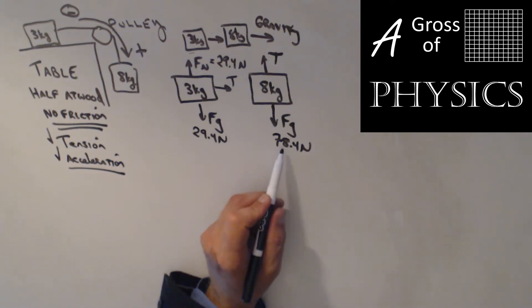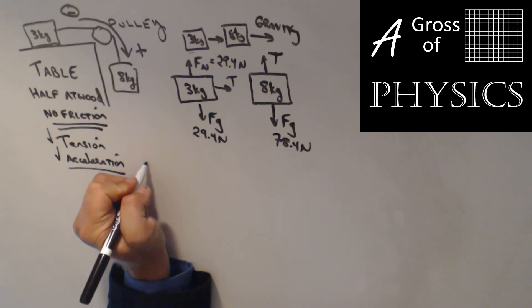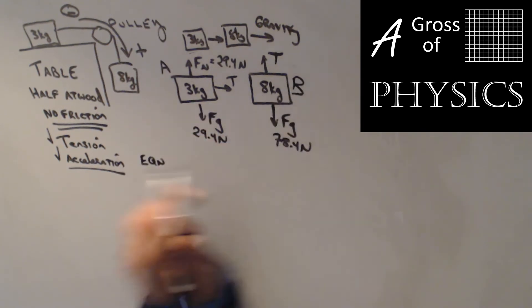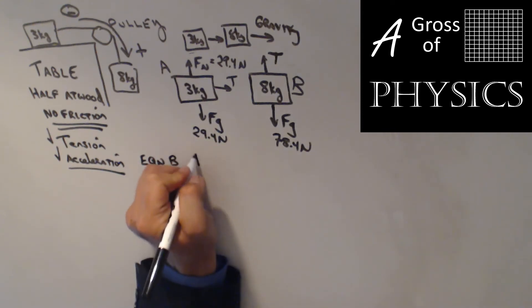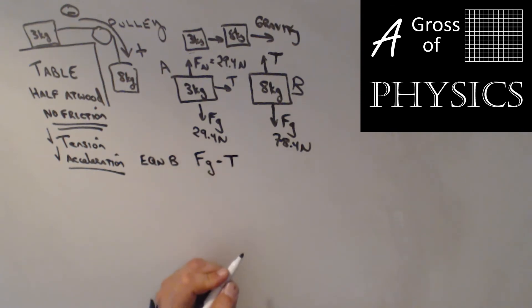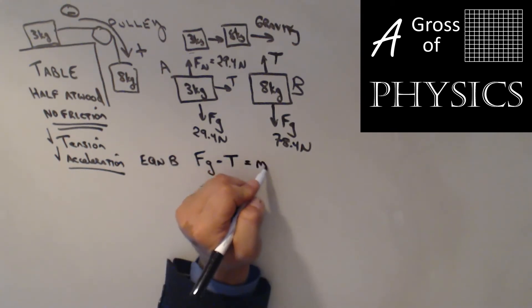Let's start with the 8 kg mass. I'm going to draw the equation. We'll call this block A and block B. Although gravity is down and negative, the motion of the problem is clockwise, which means the gravitational pull is in the direction of motion, so I'll call that positive. The tension opposes it, then I'll set it equal to MA.